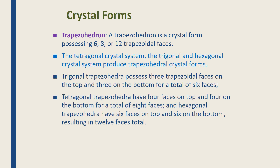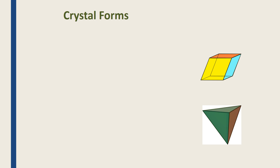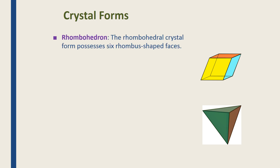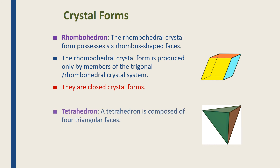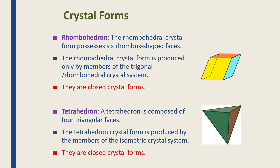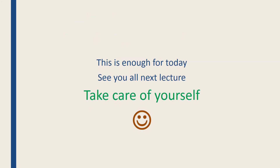Trapezohedra are composed of six, eight, or twelve trapezoidal faces — trigonal and tetragonal examples exist, and all are closed crystal forms. Rhombohedron crystal forms possess six rhombus-shaped faces and are also closed crystal forms. The main point is to understand the difference between open and closed crystal forms. The tetrahedron is composed of diagonal faces and is also a closed form.